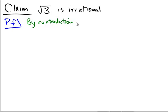So the way we're going to approach this by contradiction is we're going to assume, for the sake of contradiction, assume that the square root of 3 is rational. In other words, that it could be written as a fraction.